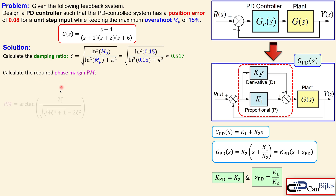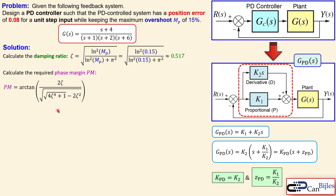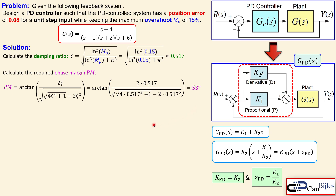We need the phase margin, which is the key parameter in the frequency response design method. Using the formula — the arctangent expression involving zeta — and substituting our damping ratio of 0.517, we get 53 degrees as the required phase margin.